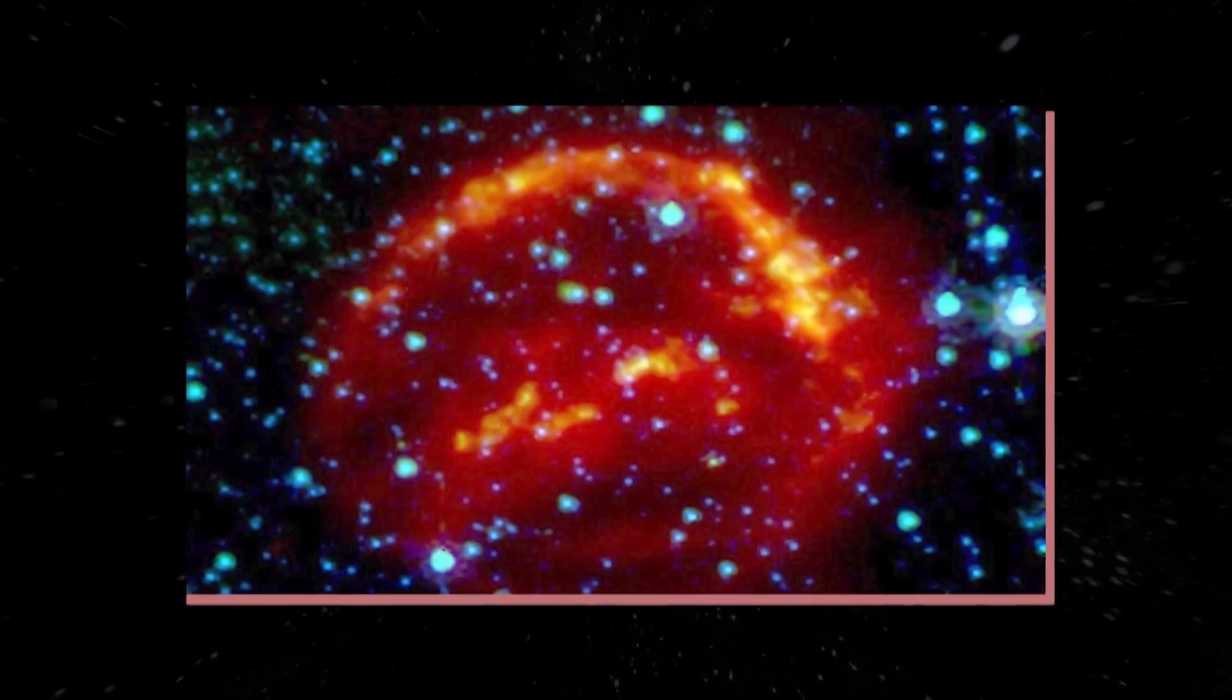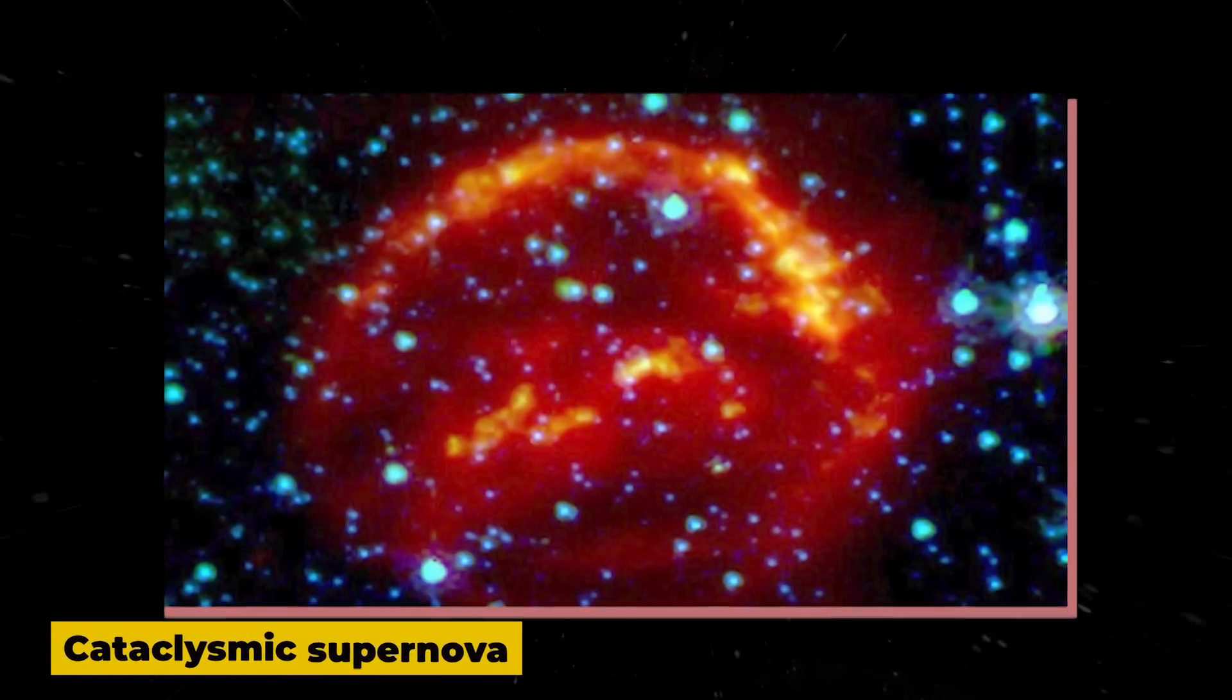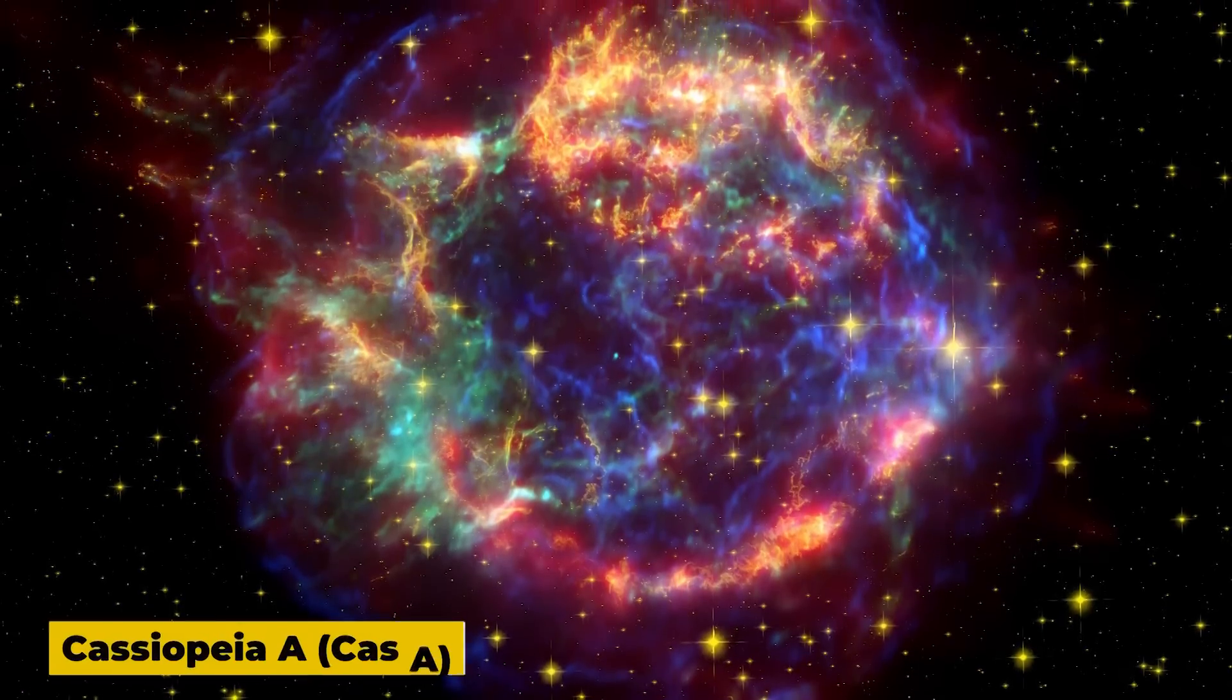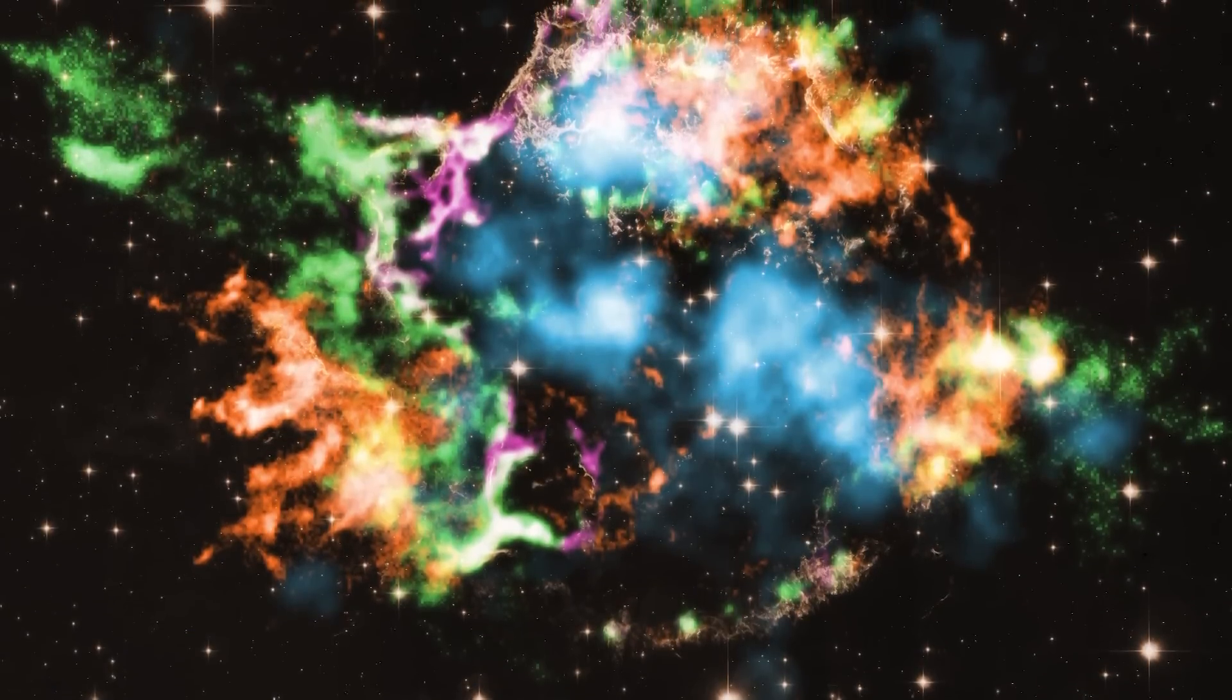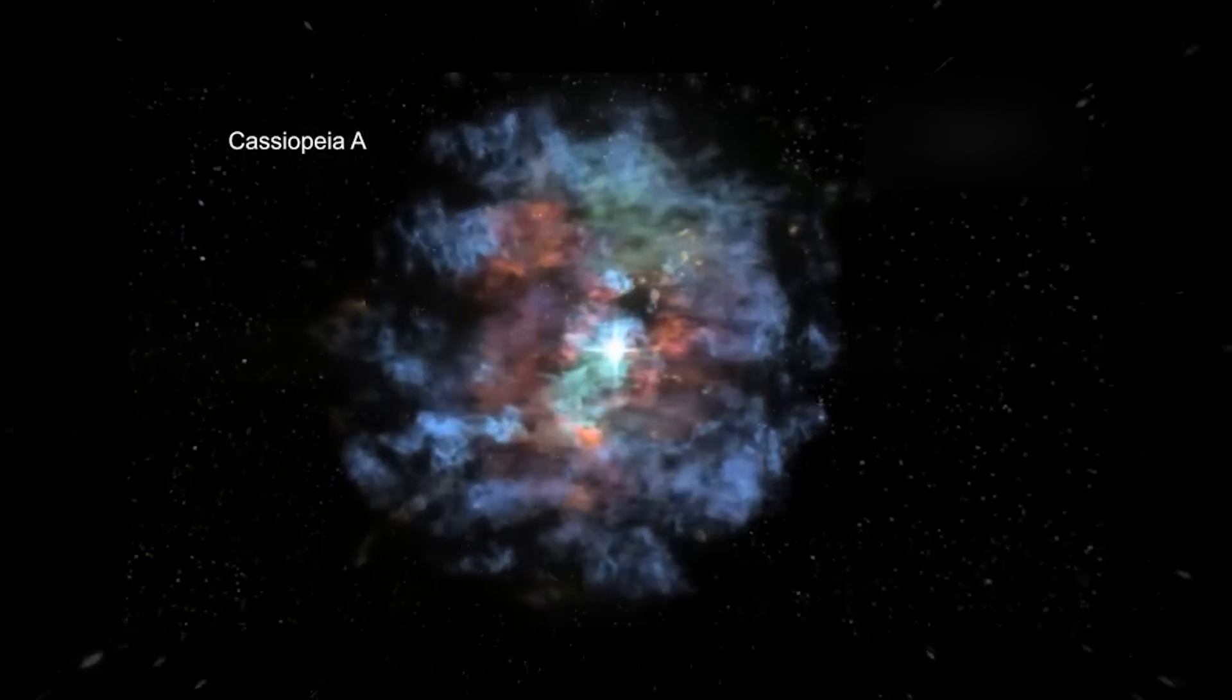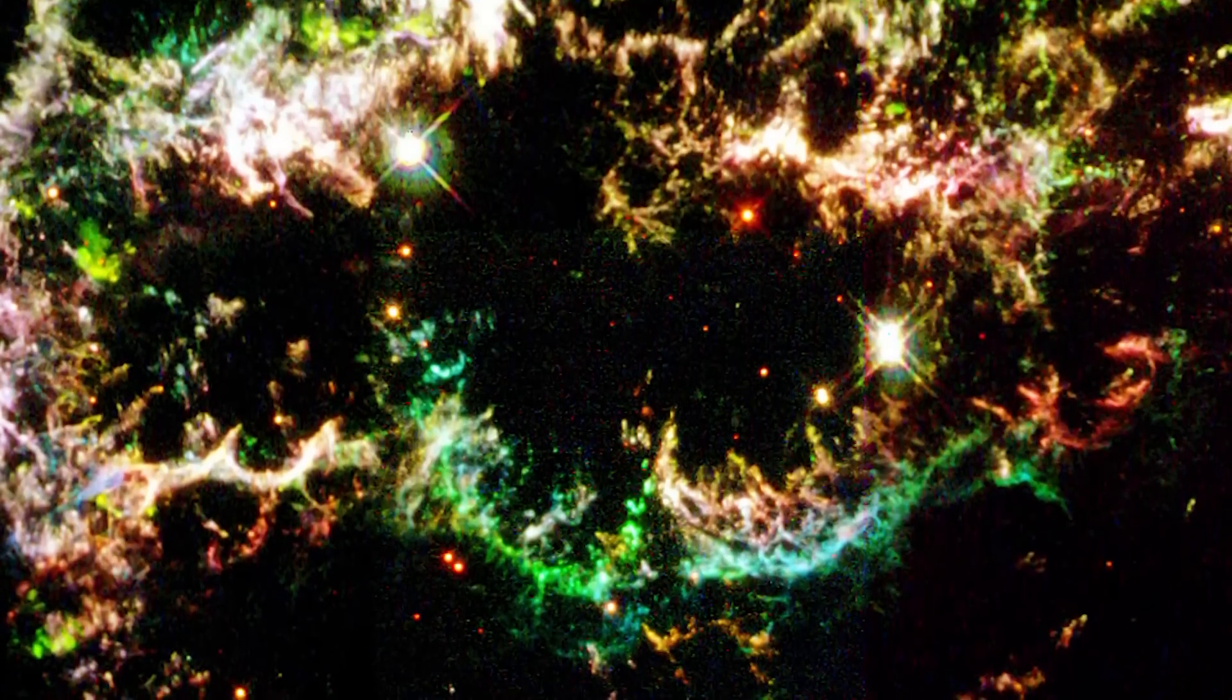Shows in stunning detail the wreckage of a cataclysmic supernova explosion. The supernova remnant known as Cassiopeia A or Cas A formed about 340 years ago from our perspective here on Earth. This makes the 10 light year wide Cas A one of the youngest clouds of supernova wreckage we know of.